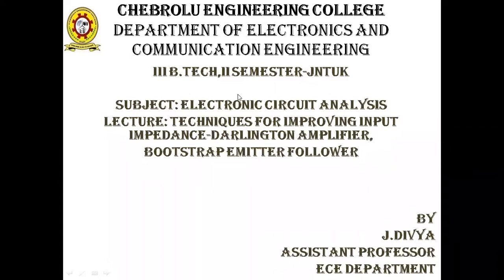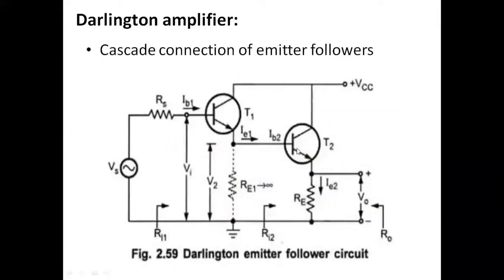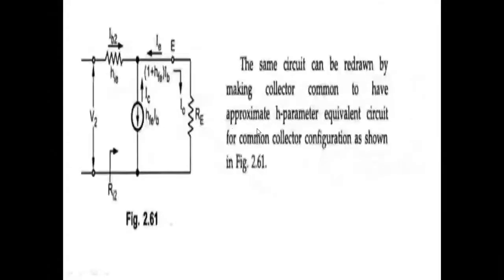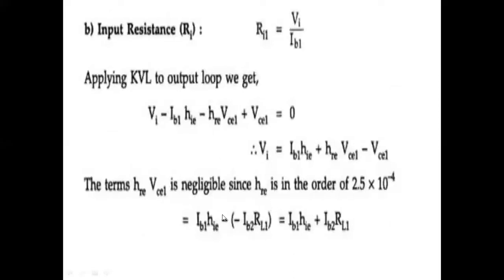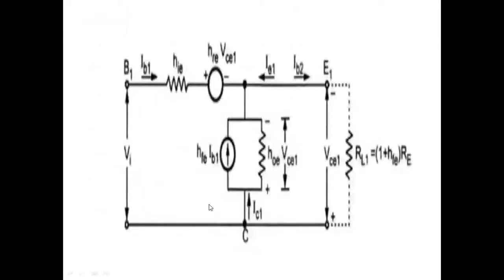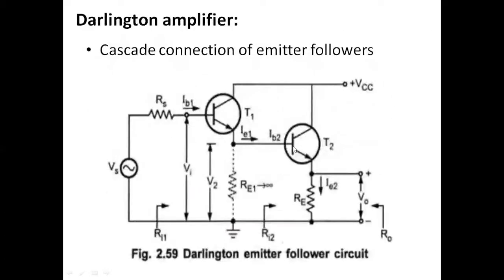In the Darlington amplifier, we are cascading two emitter followers or two CC configurations without any biasing resistances R1 and R2. We already analyzed the circuit - the second stage analysis. Coming to the analysis of the first stage after covering what is the current gain and the value of the current gain, so RI1 is the input resistance of first stage. We have two stages or two transistors and we already analyzed the second stage.